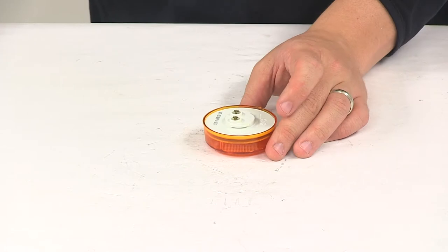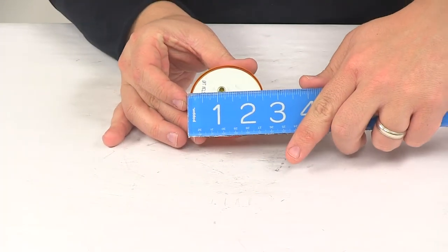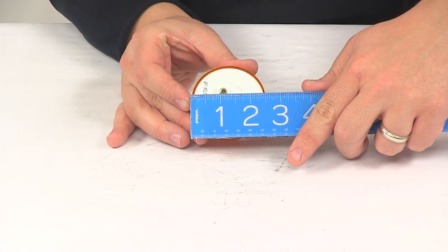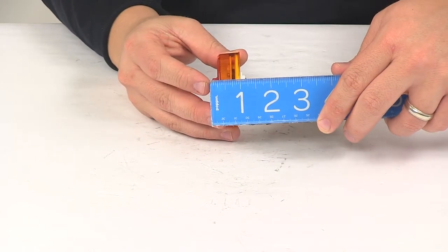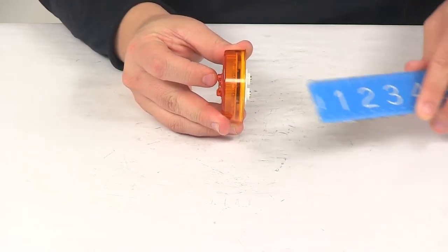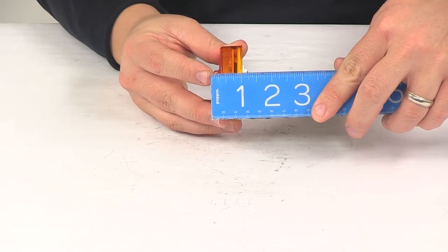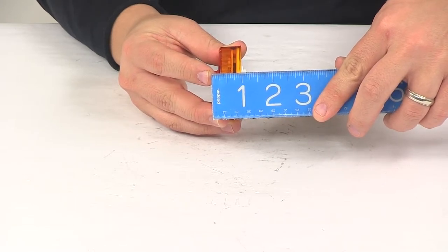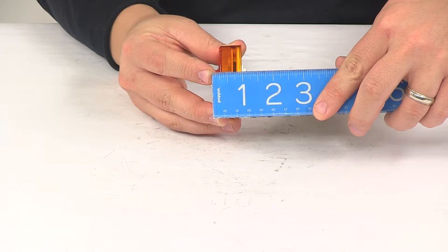Taking a look at some of the dimensions. Overall diameter is going to be about two and a half inches, and then the overall depth. It has this area right here that sticks out a little bit further. That's going to be pretty close to one inch, maybe 15/16ths of an inch right in that area.